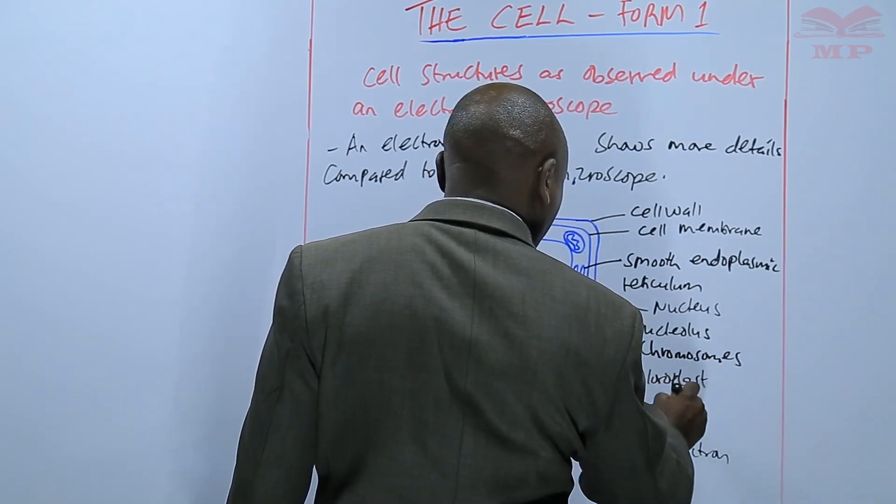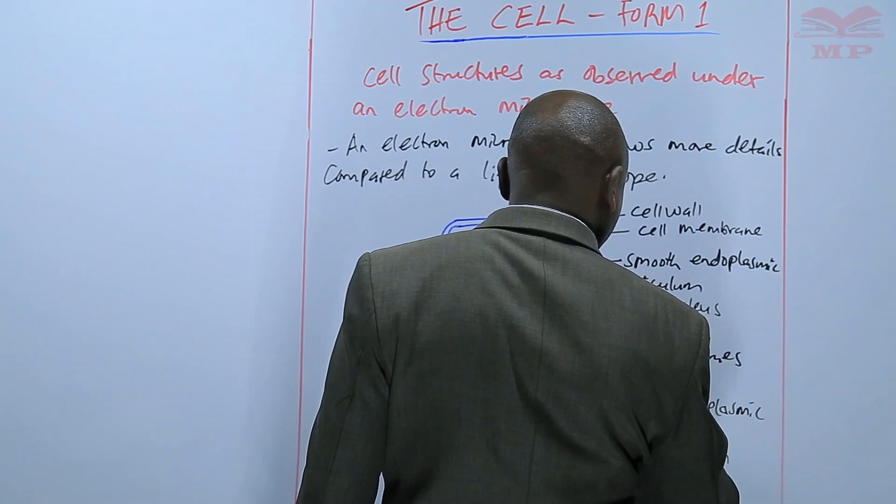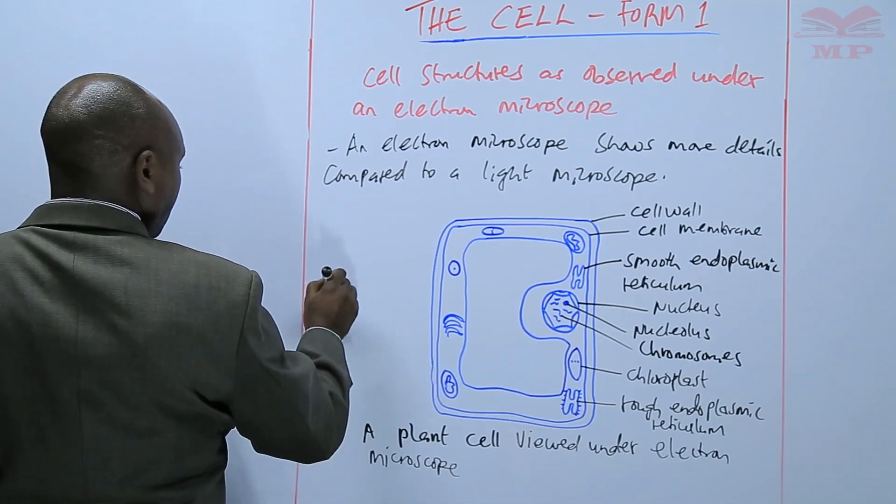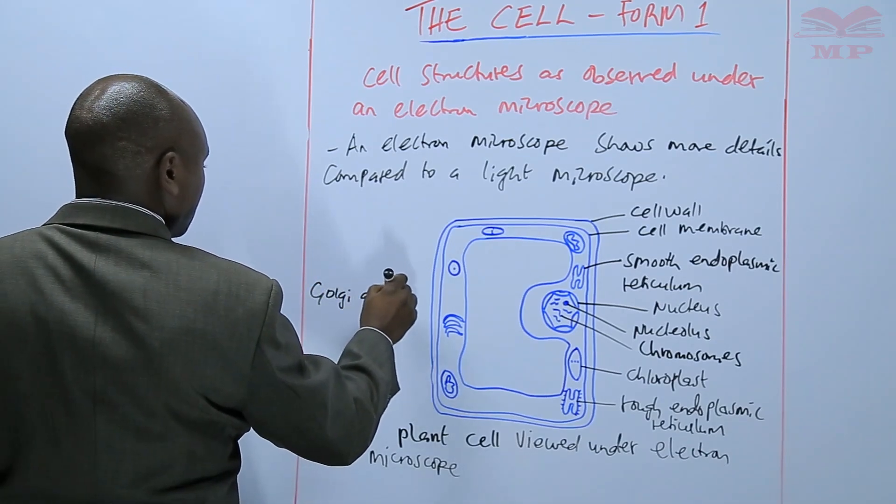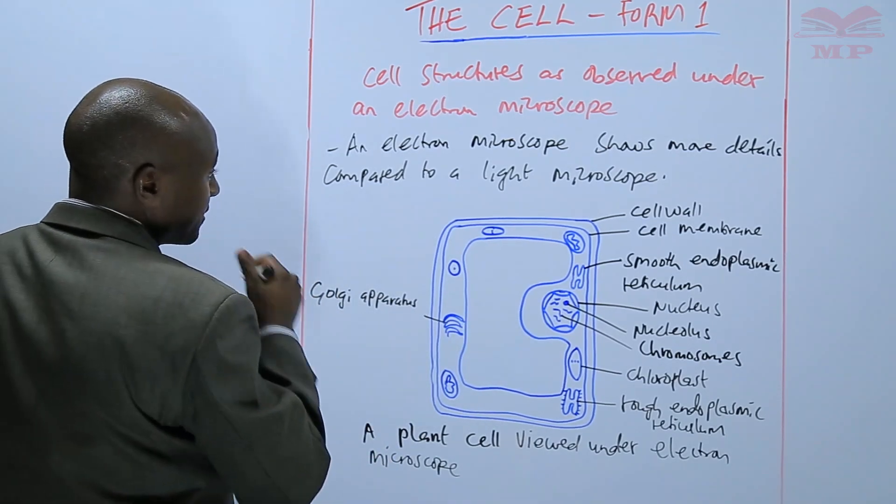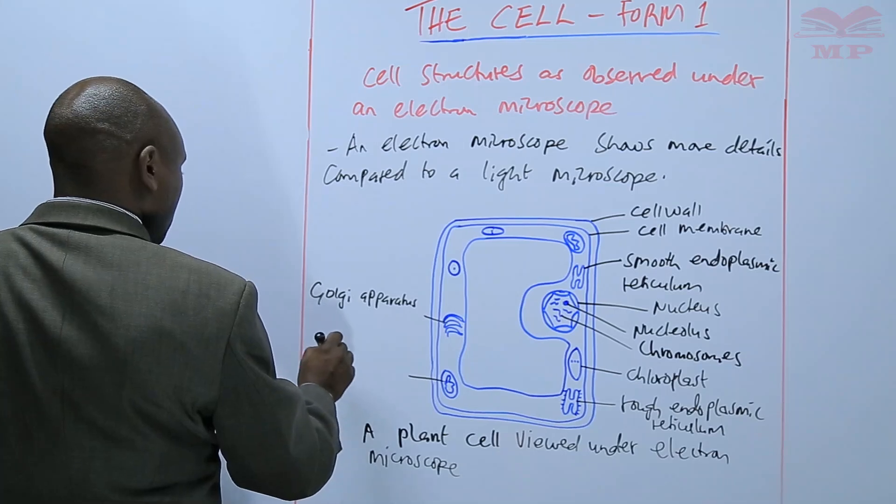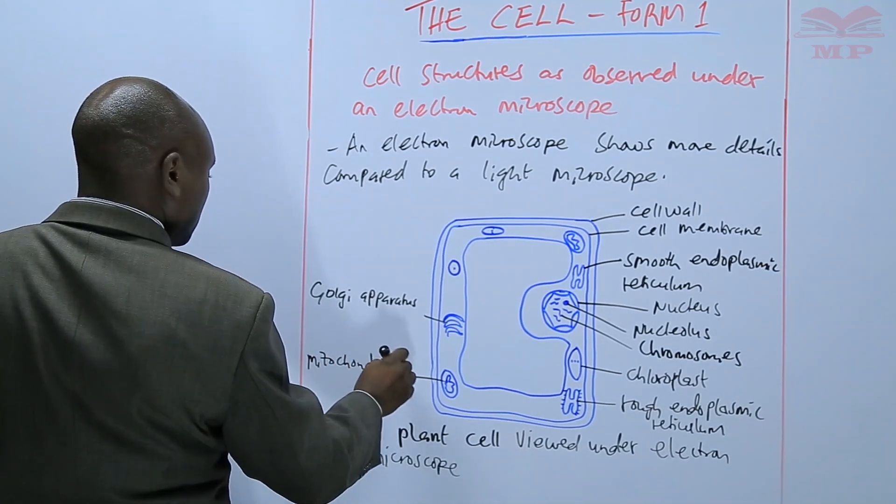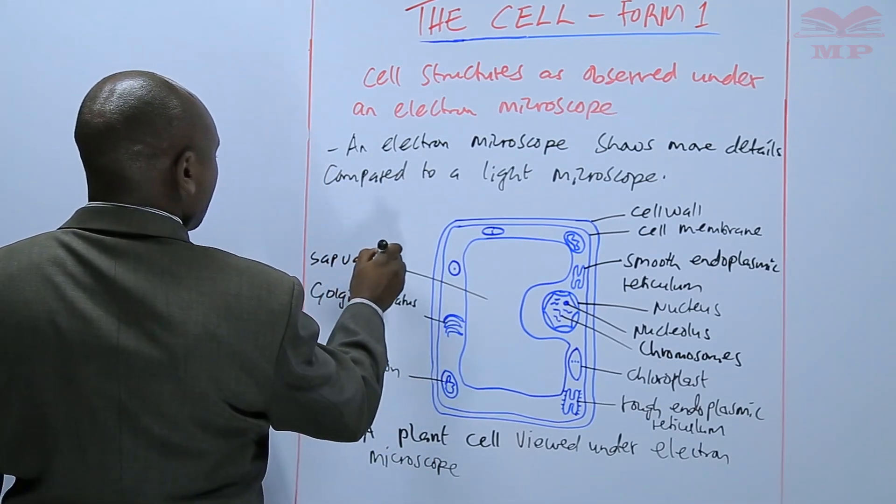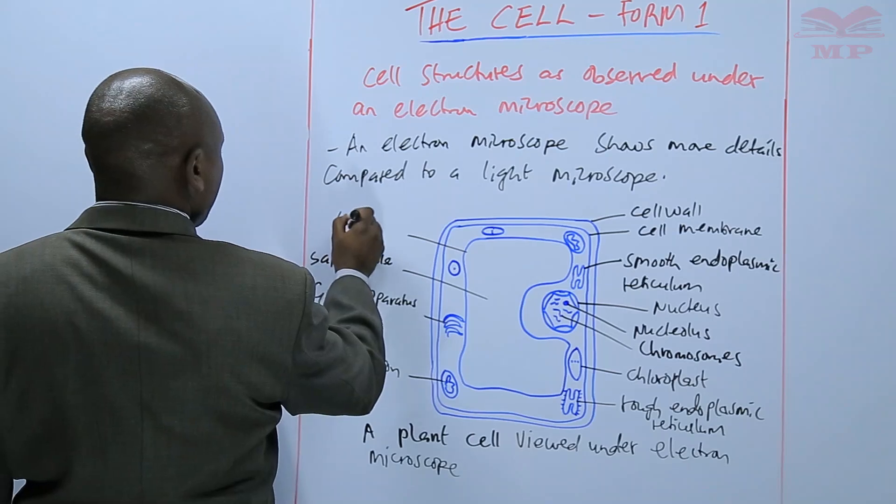Rough endoplasmic reticulum, the golgi apparatus, mitochondrion, the sap vacuole is still visible, tonoplasts.